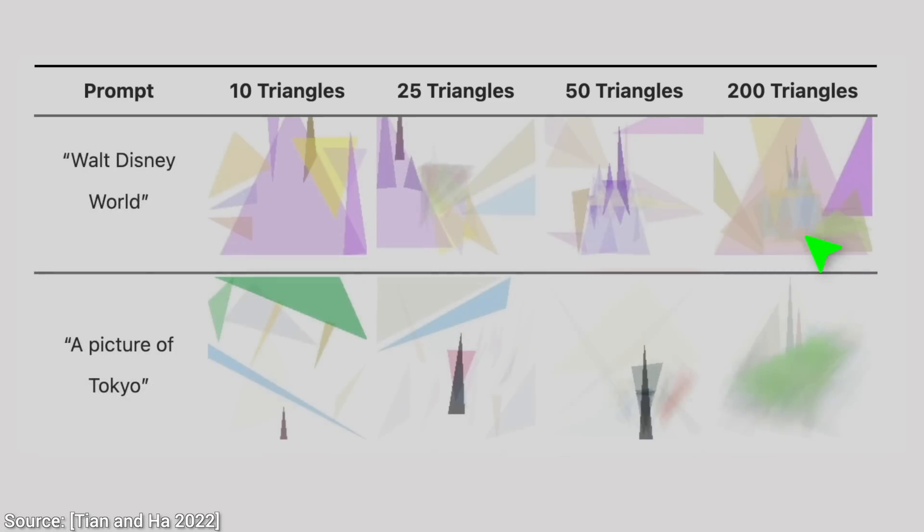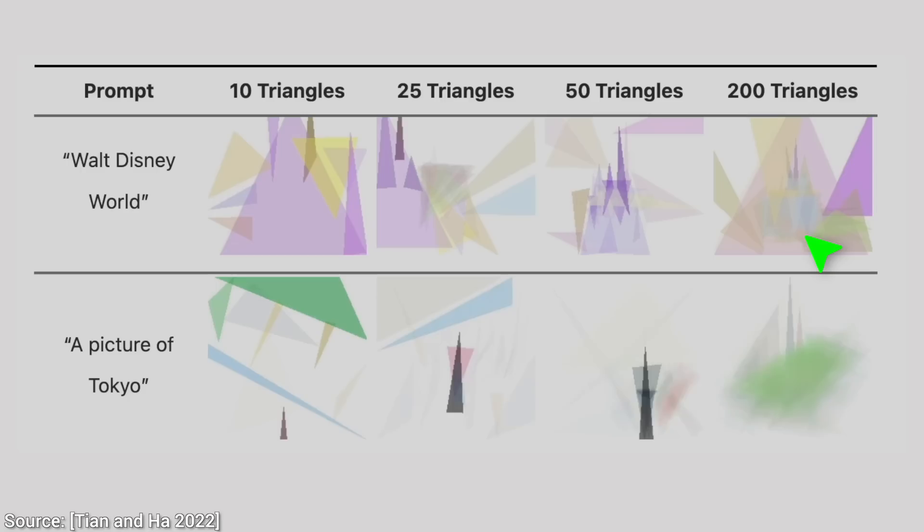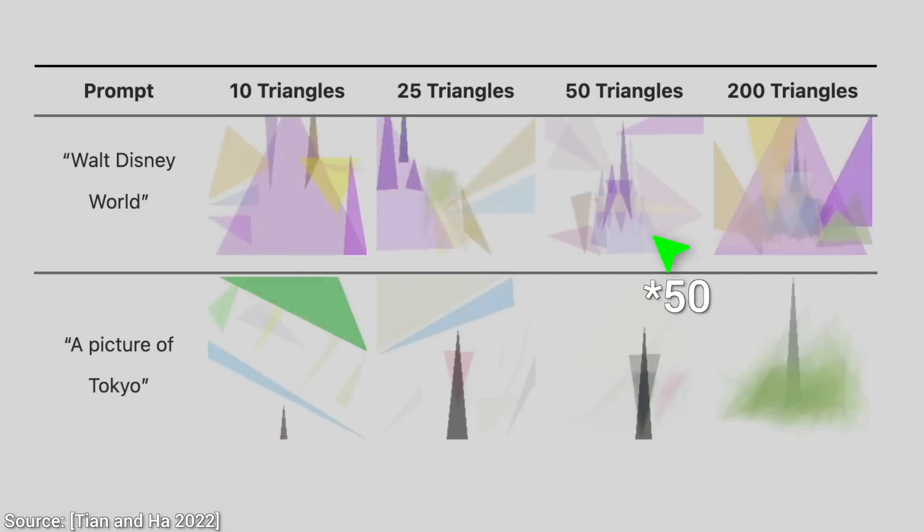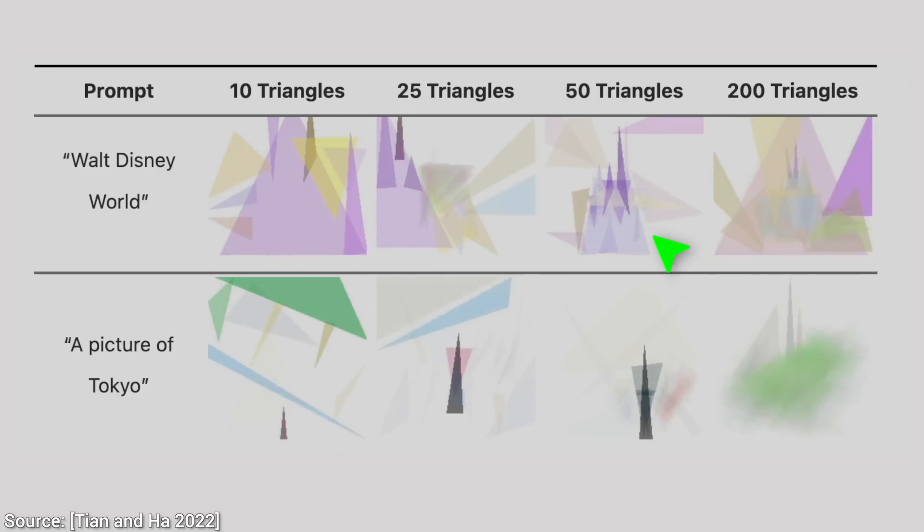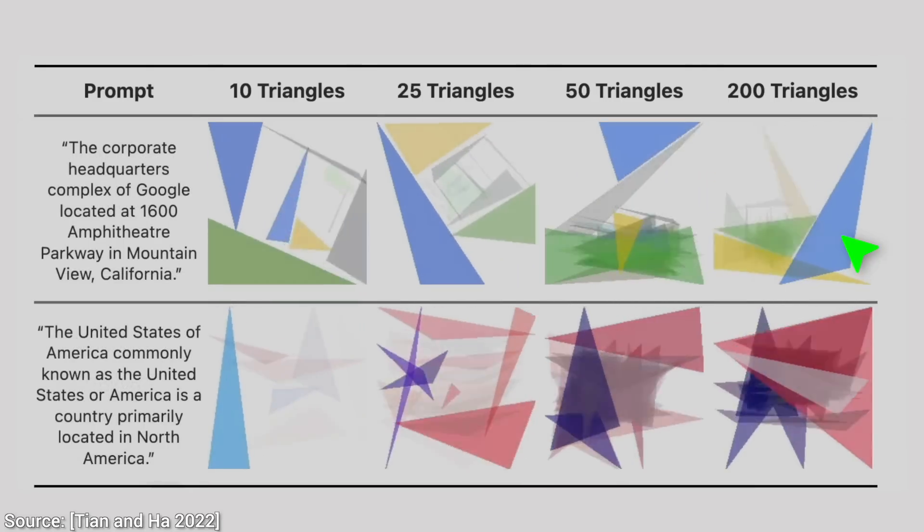But it can also try to draw Walt Disney World. That is remarkable. Look at how beautifully it boils it down to its essence with as few as 200, or even just 25 triangles. Loving it. Also, drawing the Google headquarters. No problem at all.